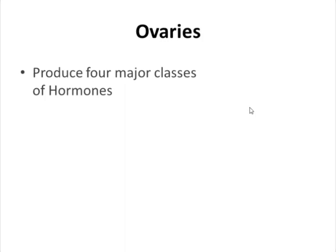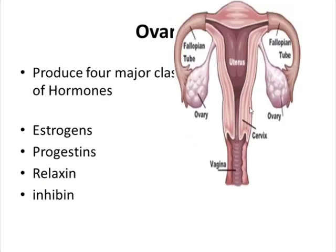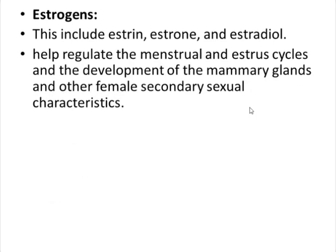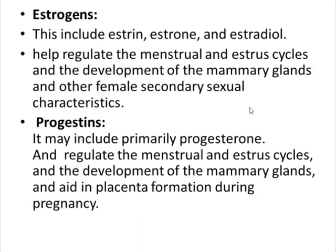The next gonad we are going to discuss is the ovaries. The ovaries are present in the female and produce four classes of major hormones: estrogens, progestins, relaxin, and inhibin. The estrogens include estrone, and estradiol. These estrogens help regulate the menstrual and estrous cycle, the development of the mammary glands, and the female secondary sexual characteristics.